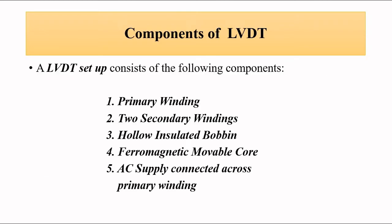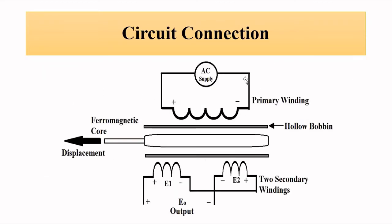The basic components of LVDT are a primary winding connected to an AC supply and two secondary windings connected in series opposition mode or differential mode, such that the difference between the output voltages appearing across these two windings, E1 minus E2, is the output.